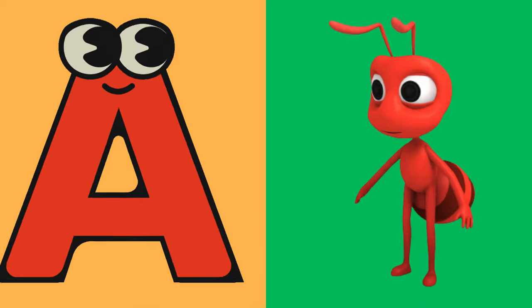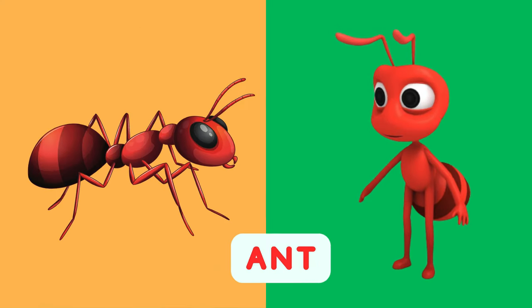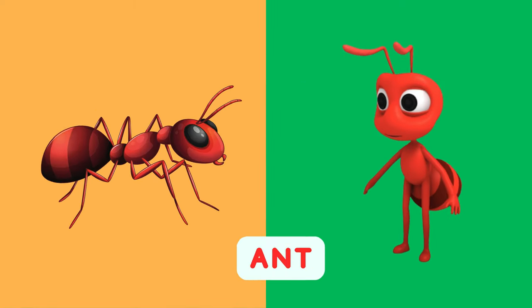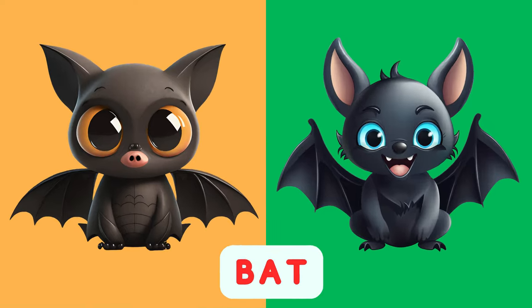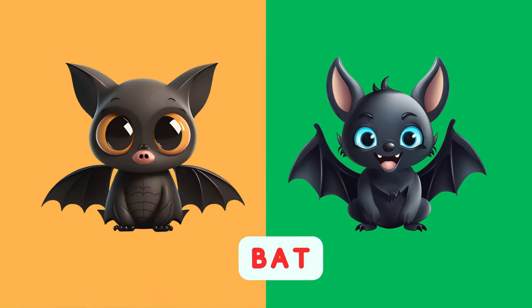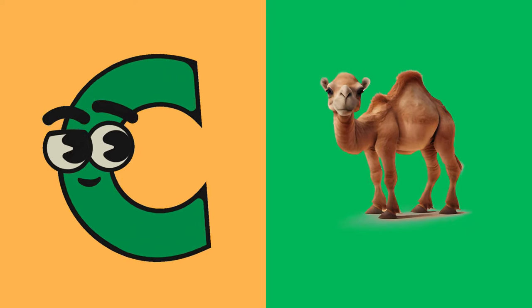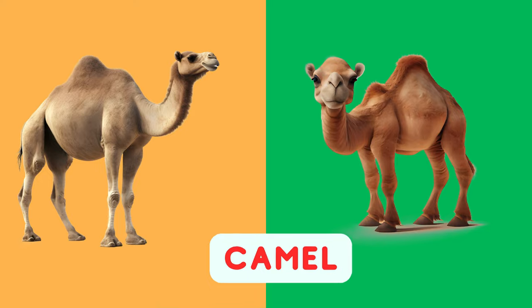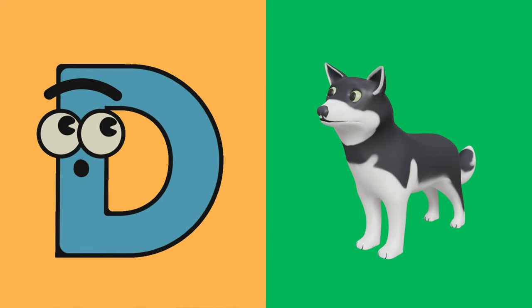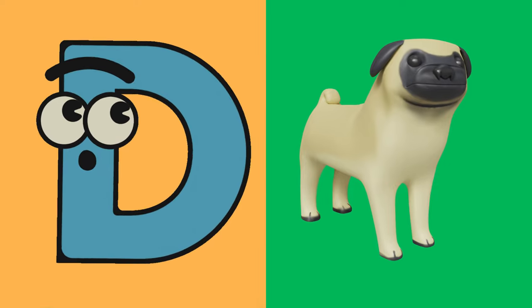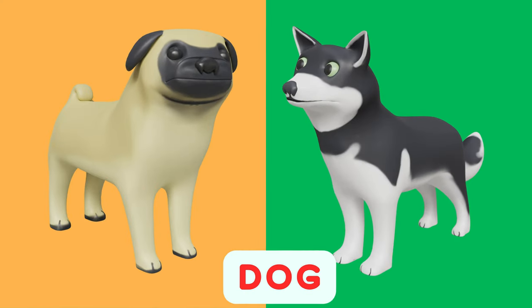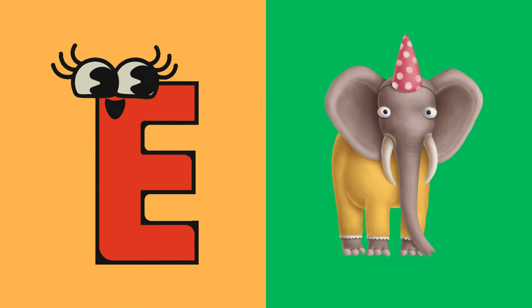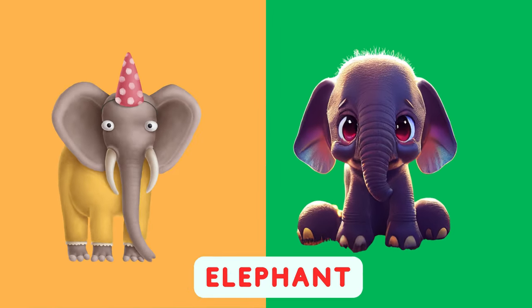Animal Phonics Song. E is for Elephant, E, E, Elephant. E is for Elephant, E, E.